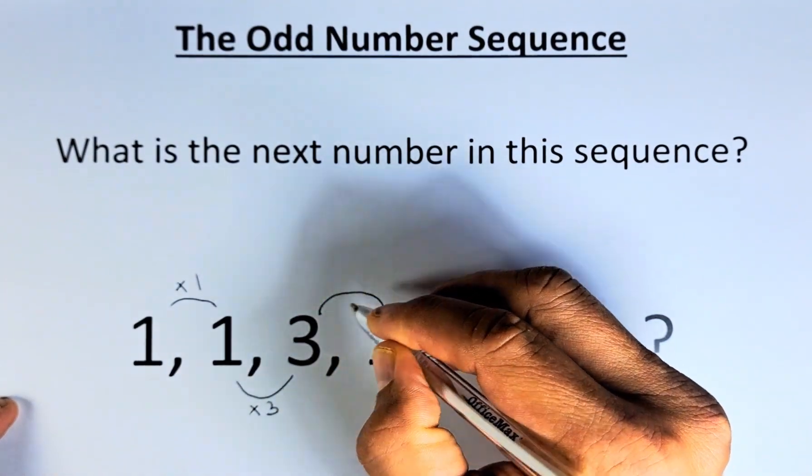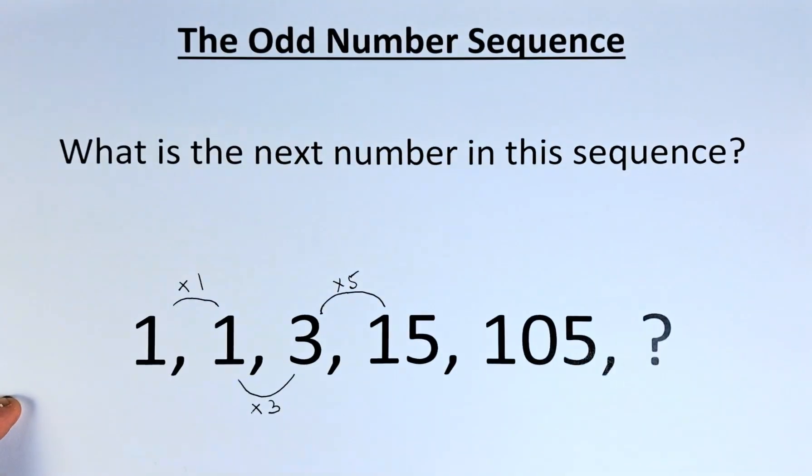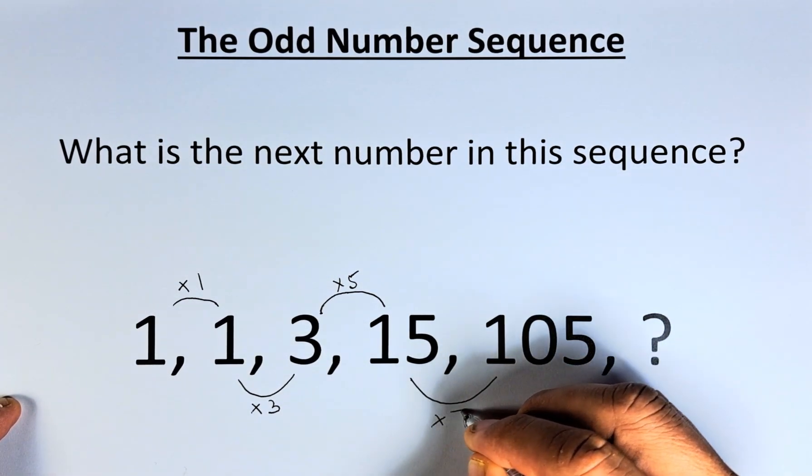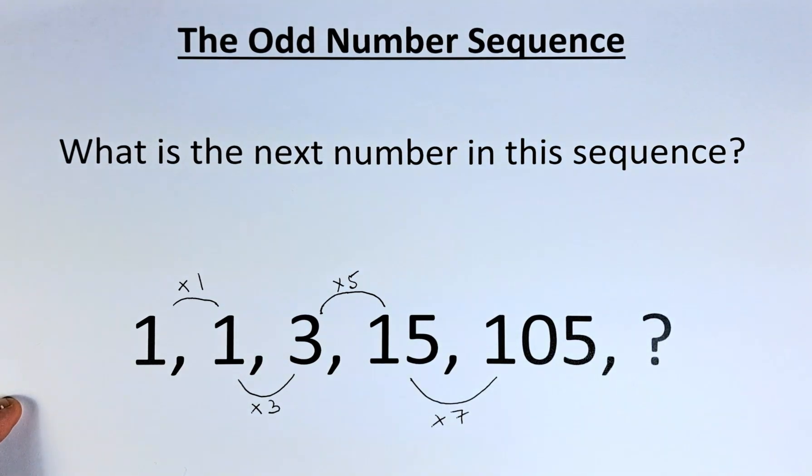And then 3 multiplied by 5 will give us 15. Of course, the next one, we are going to multiply by 7. 15 multiplied by 7 is 105.